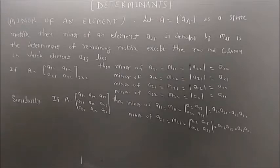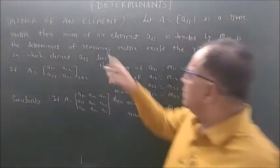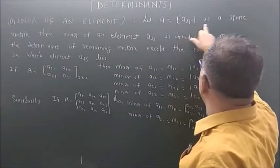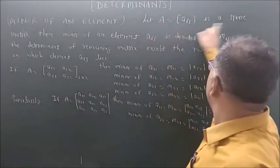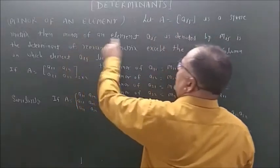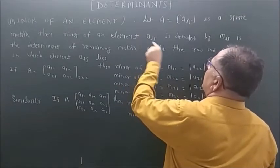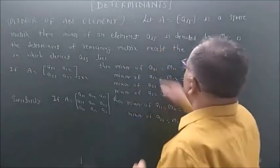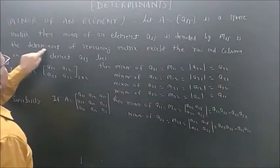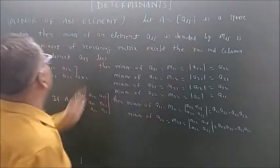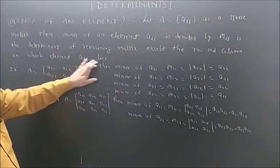The first topic is minor of an element. So what is the concept of minor of an element? Let A equal to aij be a square matrix — minor can be found only for a square matrix. The minor of an element aij is denoted by mij, and its value is the determinant of the remaining matrix after removing the row and column in which element aij lies.